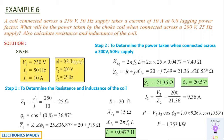You will be getting 1.753 kW as the actual power consumed when the choke coil is connected to the 200 V, 25 Hz supply.